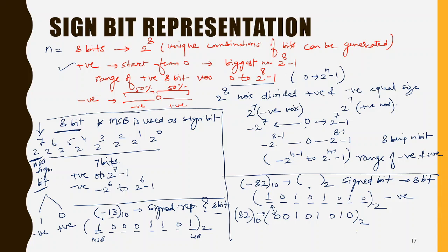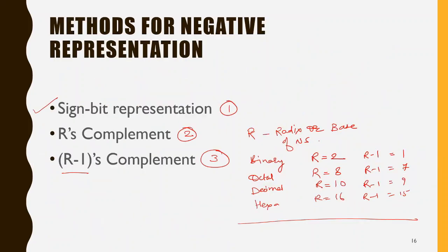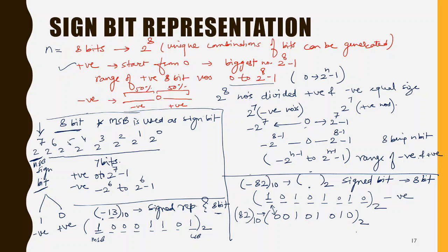This is the concept of sign bit representation — how to convert a negative number to a binary representation using signed bit representation. If it is specifically mentioned to use sign bit representation, apply this method. Other methods are r's complement and r-1 complement, and it would be specifically mentioned in the question, or it depends on the computer hardware.